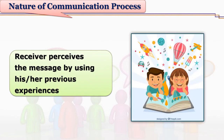The receiver perceives this message by using his or her own previous experiences. These previous experiences of the receiver help the receiver to perceive the message. If nothing is relevant or related from the previous experiences of the receiver, it becomes very difficult for the receiver to understand and perceive the message. That's why we say that the teacher should always refer to the learner's environment, try to link new knowledge with previous knowledge, ask for or deliver examples from learners' lives, and relate new content with old content.